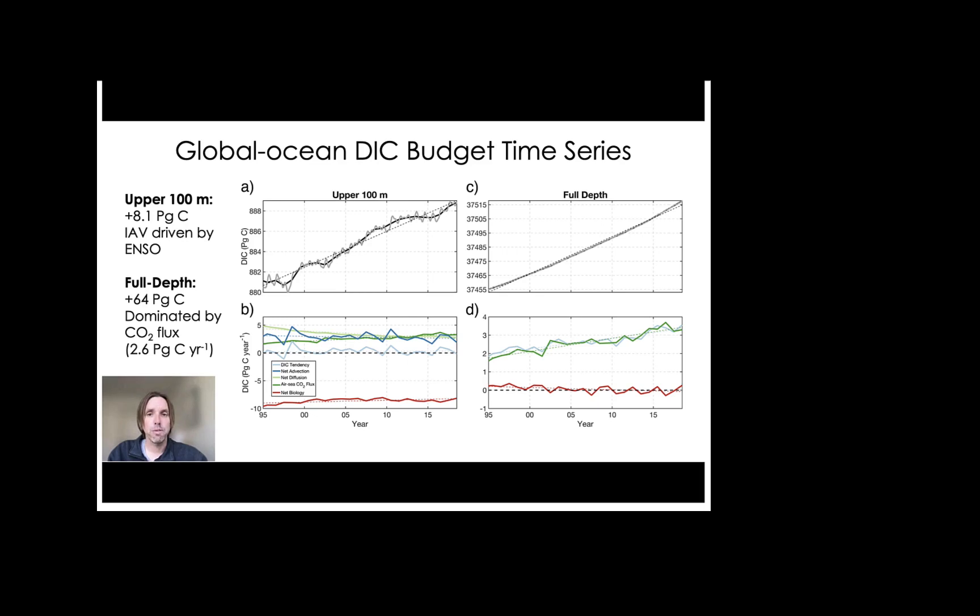So over the 24-year model period, the upper 100 meters, which is shown in panel A, gains roughly 8.1 petagrams of carbon, with interannual variability being driven primarily by ENSO. And this is visible in the time variability of the DIC tendency term, shown in panel B, as a light blue line, which closely tracks net advection.